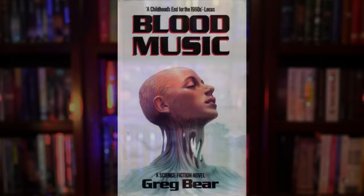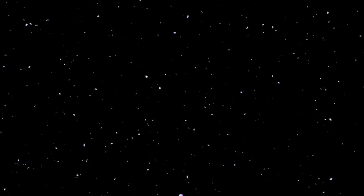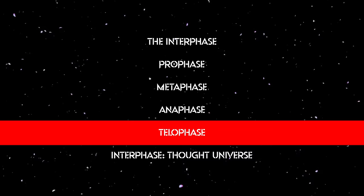Blood Music by Greg Bear is a short science fiction novel broken into five sections which vary in length: The Interphase, The Prophase, The Metaphase, The Anaphase, The Telophase, and The Interphase Thought Universe.